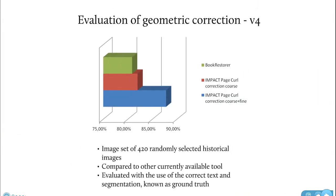Currently, we're in version 4 where we evaluated against ground truth, which is the correct text and segmentation, and we compared it to other currently available tools on a set of 420 randomly selected historical images. And you can see that Book Restore, which is the other currently available tool, is green on the top, then we have the IMPACT page code correction coarse, and then we have the IMPACT page code correction coarse and fine. So that has improved a lot.